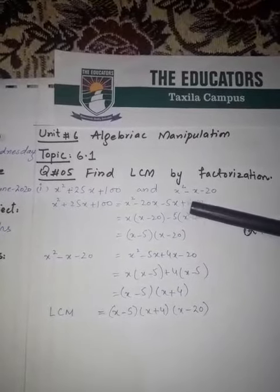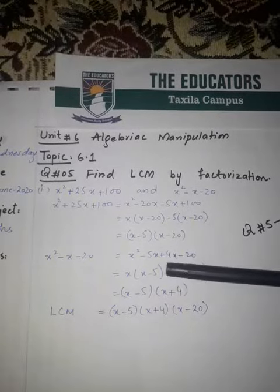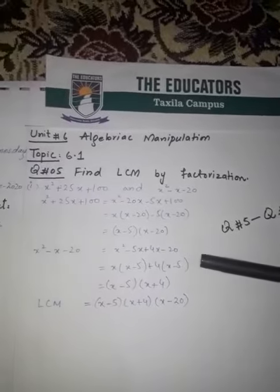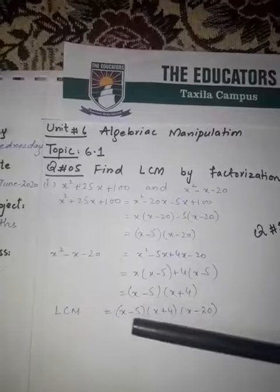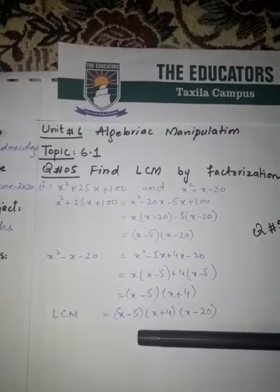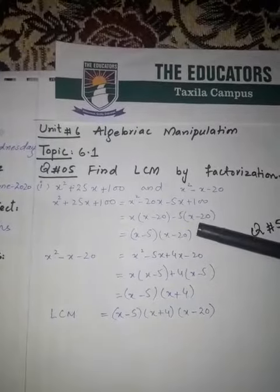...minus 20x minus 5x plus 100, and x square minus 5x plus 4x minus 20. From question number 5 to question number 7 has same concept. LCM: common thing is one time and left of all.